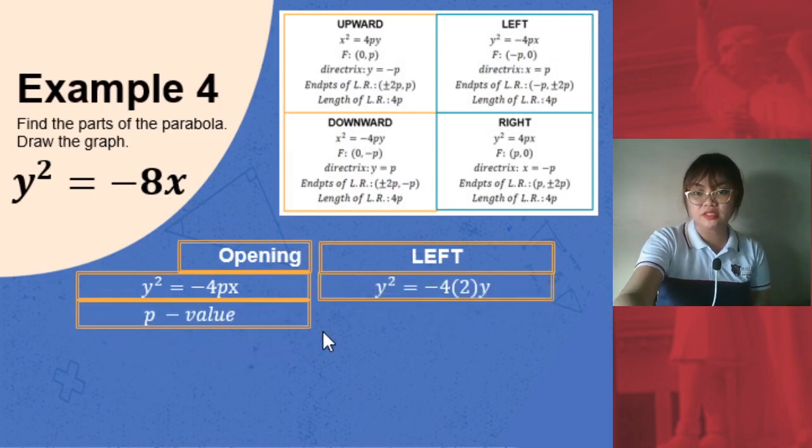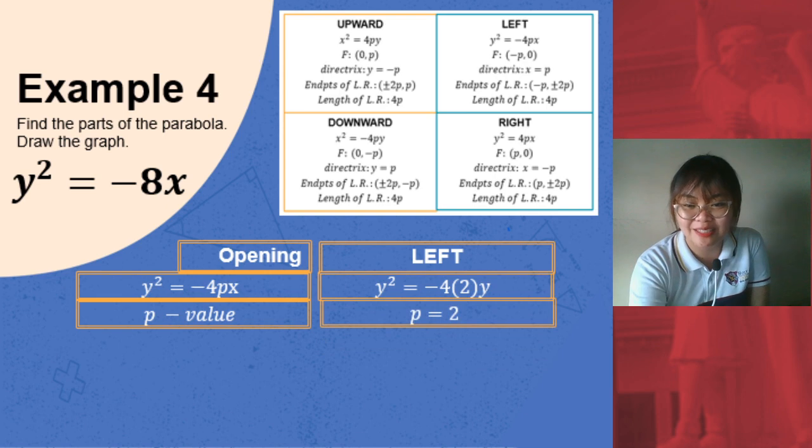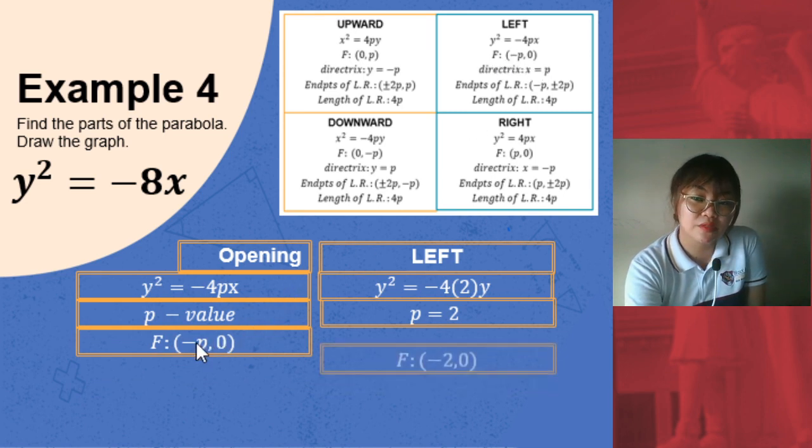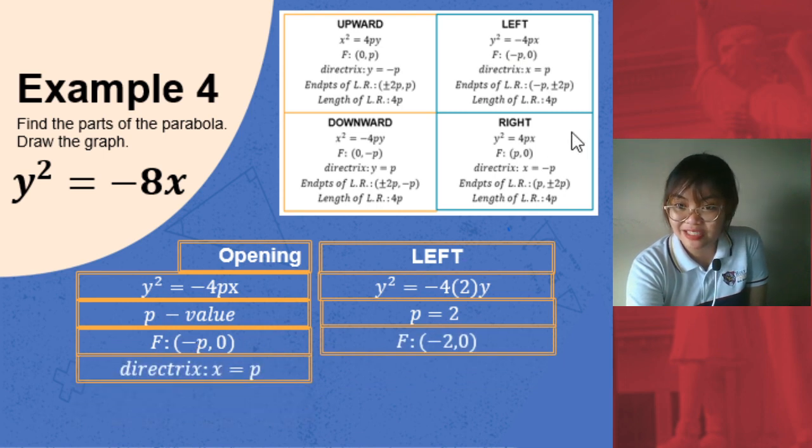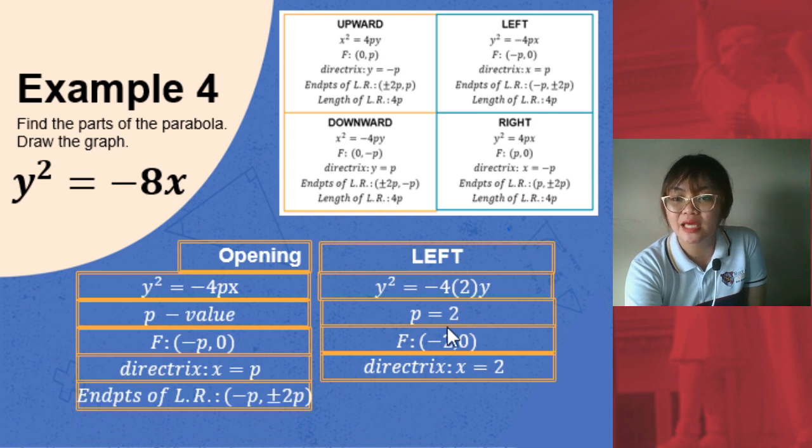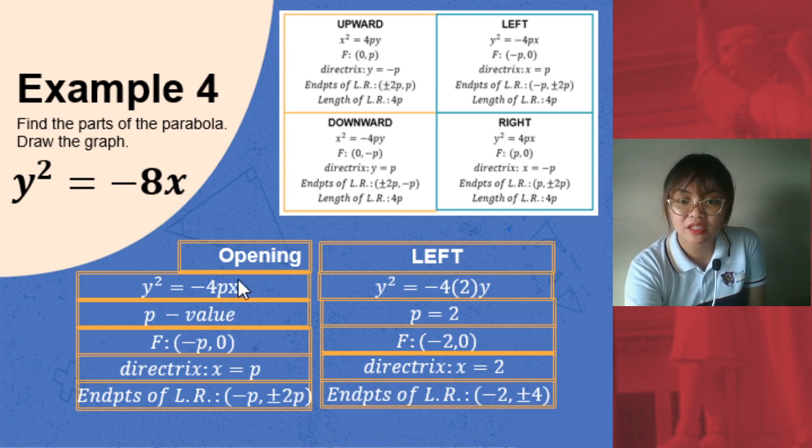And remember, p is always positive. Next. After having your p-value, everything will fall into place now. We just substitute and substitute all over again. Your focus based on the formula is negative p, 0. So substitute to negative p, 0, you'll have negative 2, 0. Next. For the directrix, x is equal to p. Substitute for p, x is equal to 2. Next. For the endpoints of the latus rectum, negative p plus or minus 2p. Substitute p. And you'll get negative 2 plus or minus 4. Last. For the measurement of the latus rectum, that's 4p. Therefore, it's 4 times 2, which is 8 units.